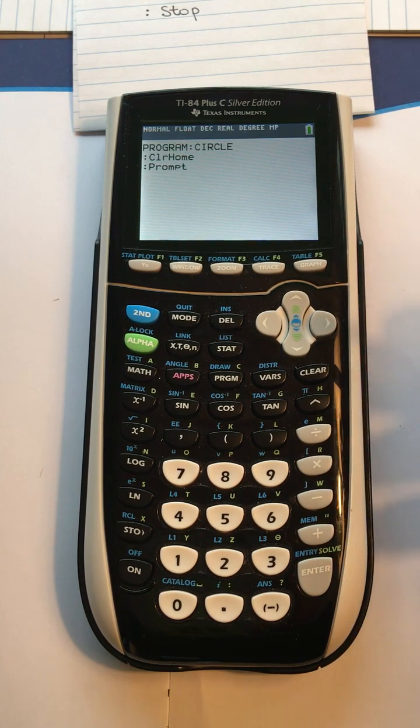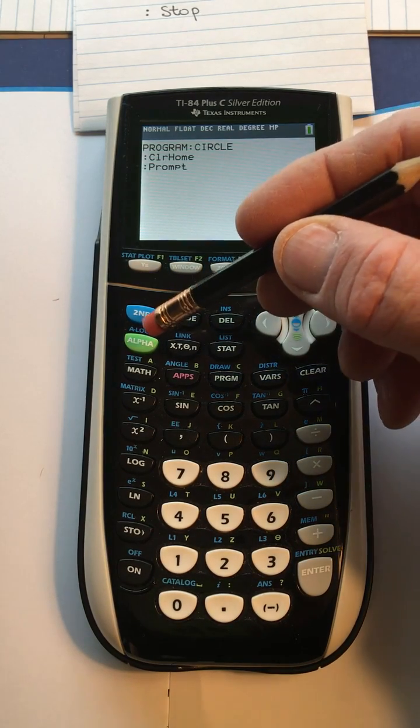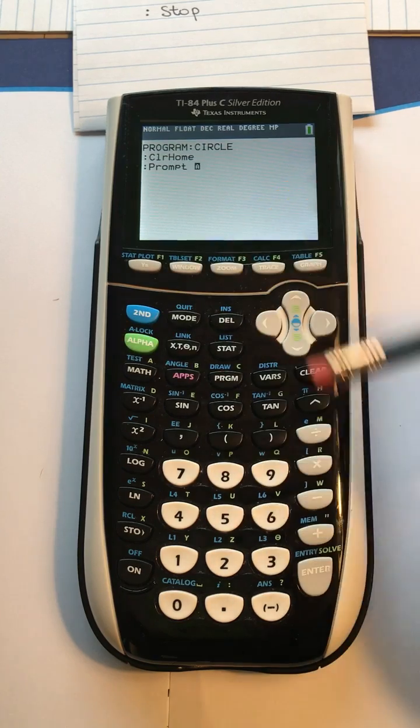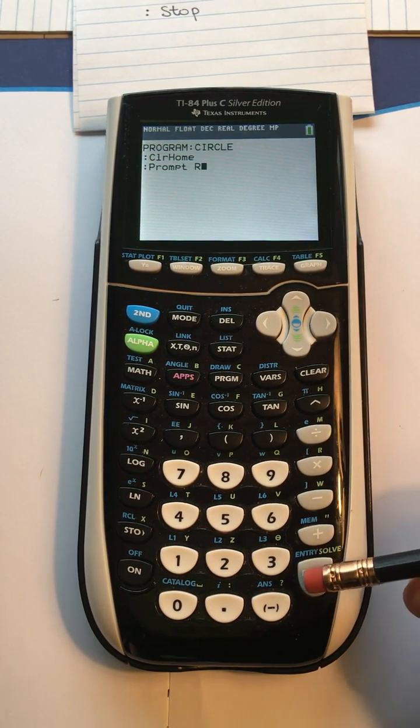Now we're back where we should be. Now to get the R put in there, we put alpha because it's an alpha letter, so alpha R, and then that completes that line so we press enter.